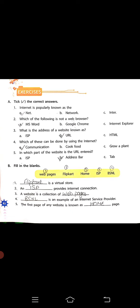Second section, fill in the blanks. First - Flipkart is a virtual store. Beta, Flipkart se hum online shopping karti hai. Second - an ISP provides internet connection. Beta, ISP hume internet connection provide karti hai.